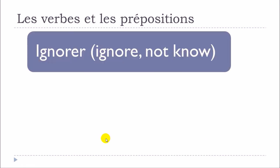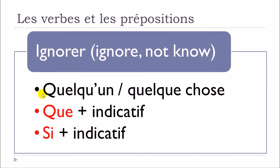Et le premier verbe est le verbe ignorer. Ignorer quelqu'un, ignorer quelque chose — pas de préposition. Ignorer que plus verbe à l'indicatif. Ignorer si plus verbe à l'indicatif.